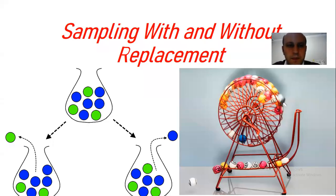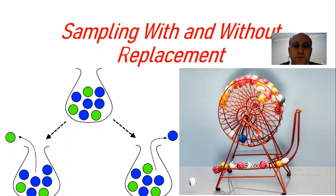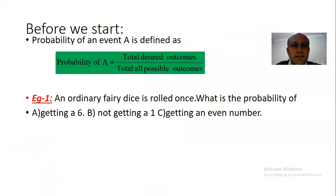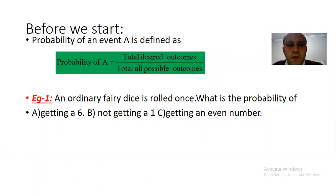Hello everyone, this is Ali Aydin. Today I'm going to discuss sampling with and without replacement. But before we get started, I would like to define the probability of an event A. Probability of event A equals total desired outcomes over total all possible outcomes.